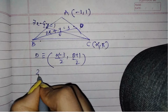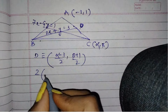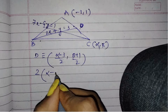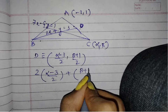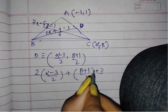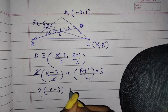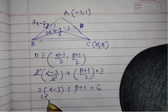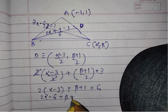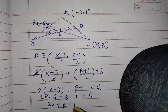Substituting these x and y values into the median equation: 2·((α - 3)/2) + (β + 1)/2 = 3. Taking LCM: 2α - 3 + β + 1 = 6, which gives 2α + β - 11 = 7, so 2α + β - 11 = 0. This is the first equation.